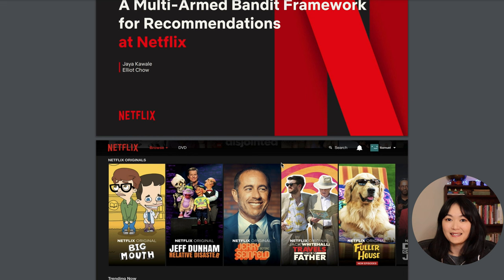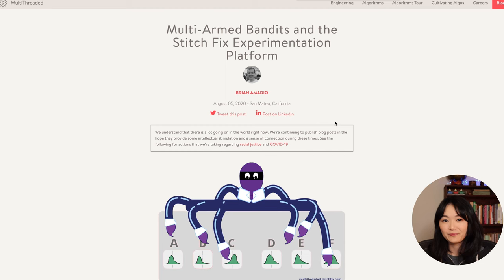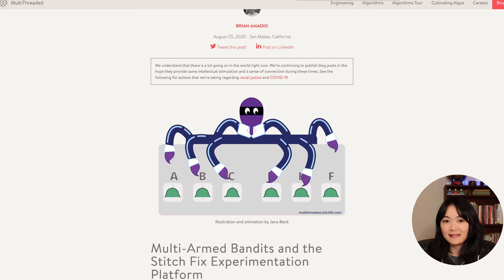Netflix uses Thompson sampling along with other bandit frameworks in their recommendation systems. Stitch Fix have added Thompson sampling to their experimentation platform.